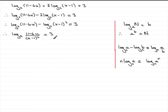Now that we've got it to this stage, we've got this concept here. The log of a number equaling something else reduces down to a to the power b equals that number. So n is the 11 minus 6x over x minus 1 all squared, b is the 3 and a is the 2. So applying this particular rule, we have 11 minus 6x all divided by x minus 1 squared equals 2 to the power 3.